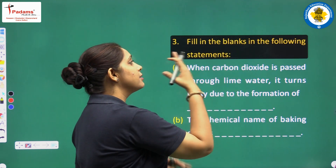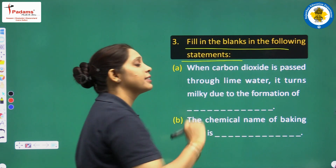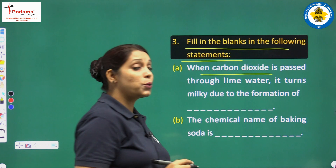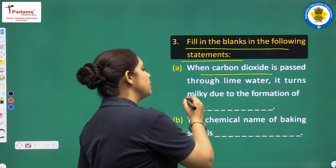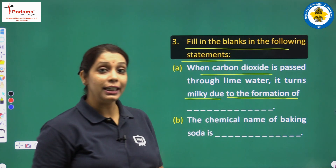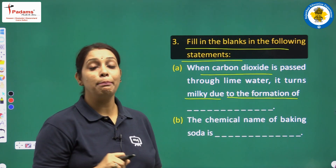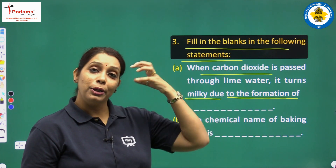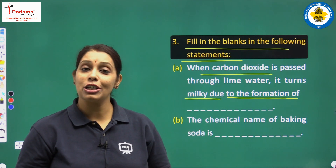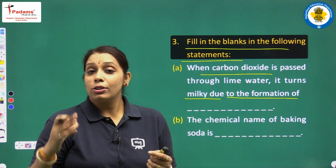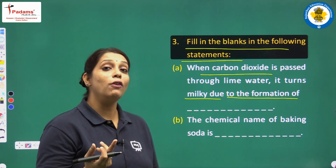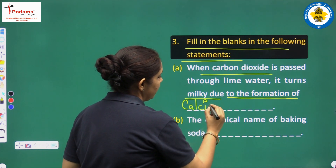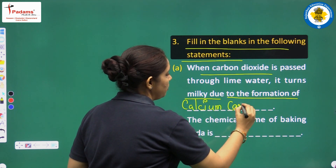Question 3: fill in the blanks. When carbon dioxide is passed through lime water, it turns milky due to the formation of — what happens? When carbon dioxide produced from the reaction of acetic acid and baking soda is passed through freshly prepared lime water, that solution becomes milky due to the formation of calcium carbonate. So we will write here: calcium carbonate.